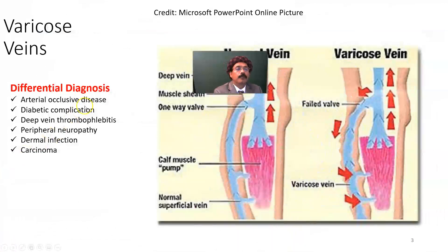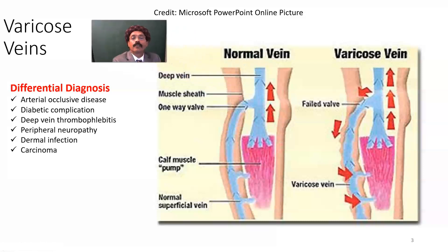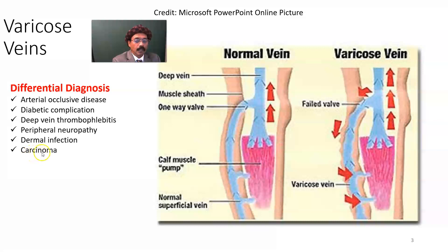The differential diagnosis of varicose ulcer includes arterial occlusive disease, diabetic complications, deep vein thrombophlebitis, peripheral neuropathy, dermal infection, and progressive carcinoma.